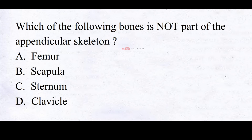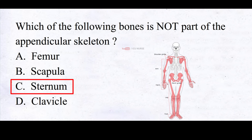Which of the following bones is not part of the appendicular skeleton? A. Femur, B. Scapula, C. Sternum, D. Clavicle. And the correct answer is C. Sternum. The femur, scapula, and clavicle belong to the appendicular skeleton, whereas the sternum does not belong to the appendicular skeleton.